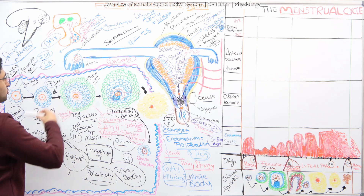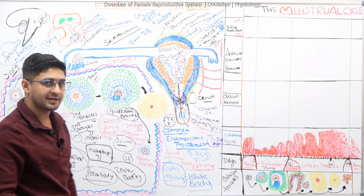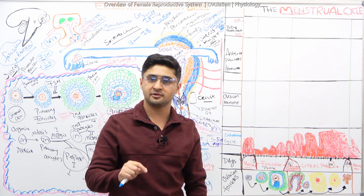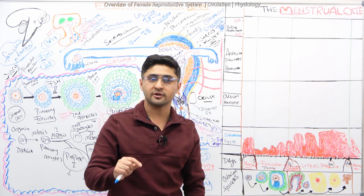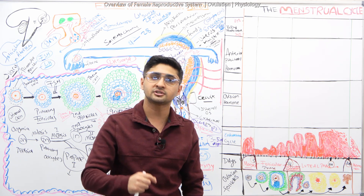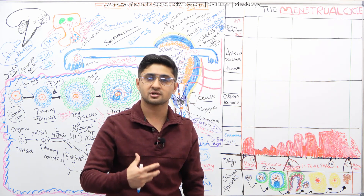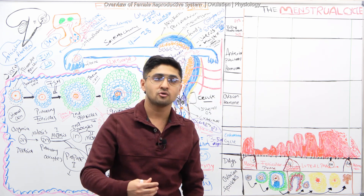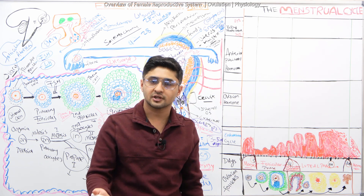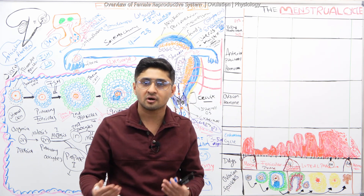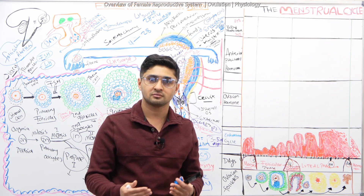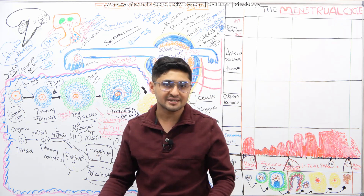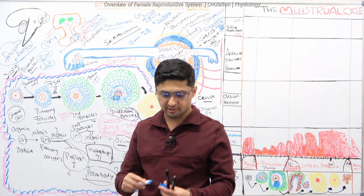FSH and LH come and work in the ovary. Remember, the ovary is the primary sex organ for a female. It has an endocrine function — producing certain hormones — but at the same time it also produces ova. That process is called oogenesis, and that's what's going to happen in the ovary as well.